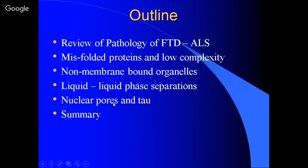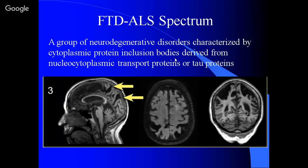Frontotemporal dementia, as I've redefined it for this talk, is a group of neurodegenerative disorders characterized by cytoplasmic protein inclusion bodies derived from nucleocytoplasmic transport proteins or tau. The common factor — and I'll drop the shoe right at the beginning — is going to be the interaction of proteins and RNA. This really gets to the heart of the origin of life: how proteins and RNA interact with one another.